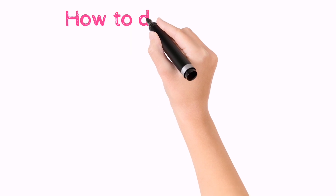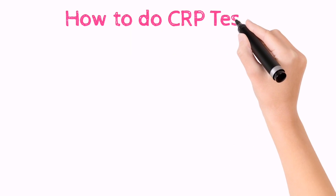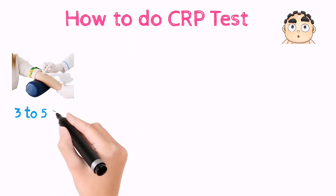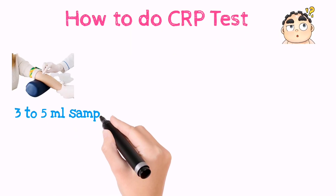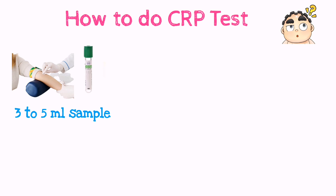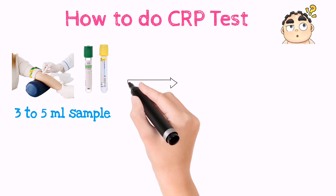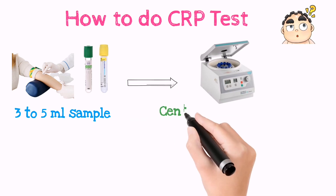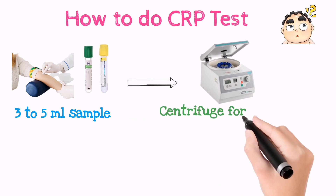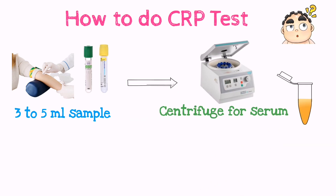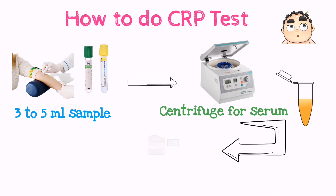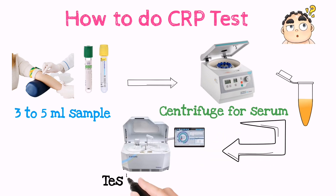Now, how to do the CRP test in the lab? For that, you will collect 3 to 5 ml of venous blood in a green top tube or gel tube. Then centrifuge for serum. After obtaining serum, the CRP test is done with the test machine.